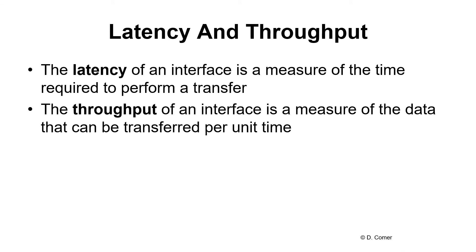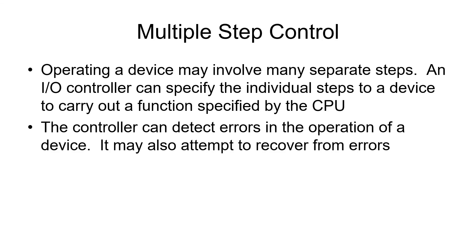When you want to measure the speed of an I/O device, you can look at its latency and its throughput. The latency is how long it takes from when you first request a command until it actually starts happening. The throughput is, once it starts going, how many bytes per second or how much data can be pushed through. Some devices require multiple steps in order to make them work; others simply say send this byte to this device and that's all it takes. As information comes in, the controller can detect errors and react properly, even attempting to recover from errors.